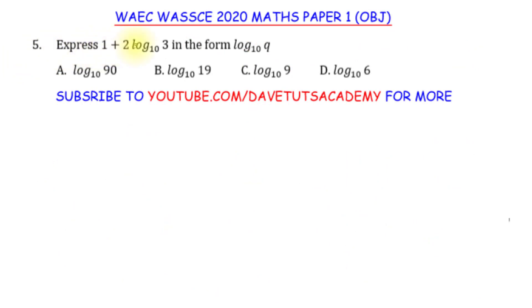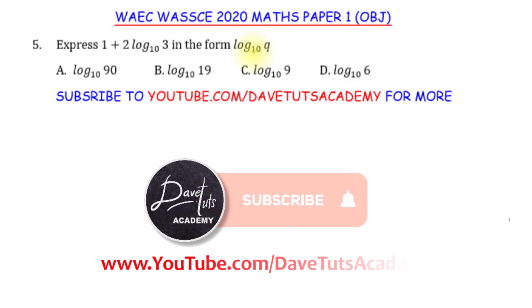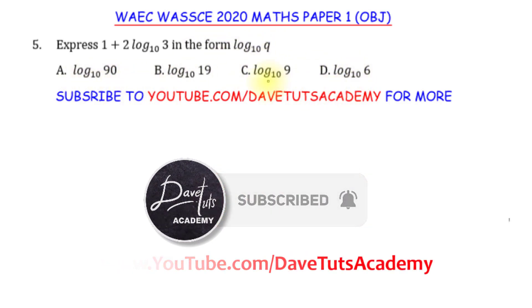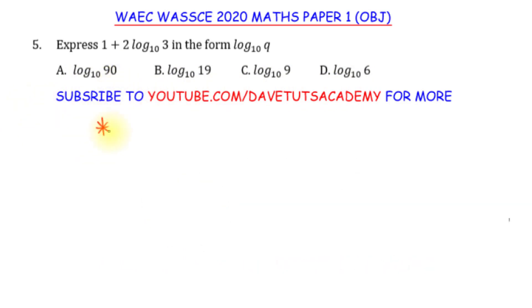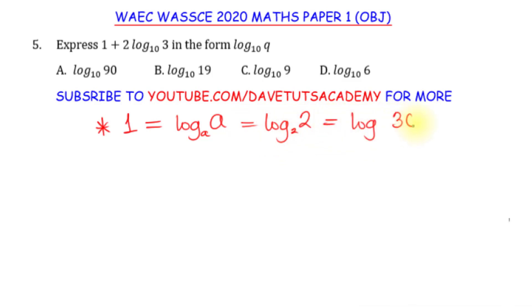In this question, we are asked to express 1 plus 2 log 3 to base 10 in the form log Q to base 10. The key point is that 1 can be expressed as the log of a number to the base of that same number. Since we are working with base 10, we rewrite 1 as log to base 10 of 10. So we have log₁₀(10) plus 2 multiplied by log₁₀(3).